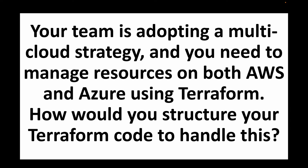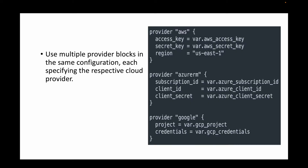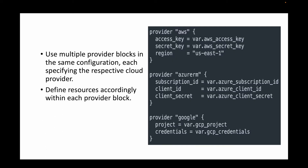The next question is: your team is adopting a multi-cloud strategy and needs to manage resources on both AWS and Azure using Terraform — how do you structure your code? Terraform supports multiple cloud platforms. We can define multiple provider blocks in the same configuration file — for example, a provider block for AWS, one for Azure, and one for Google Cloud. Resources are then defined within the scope of each respective provider block.